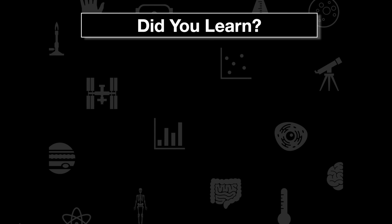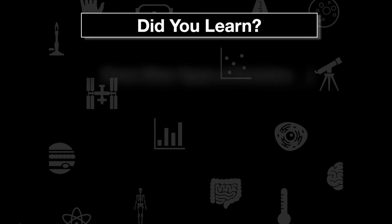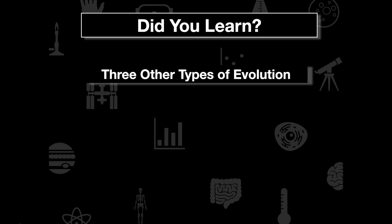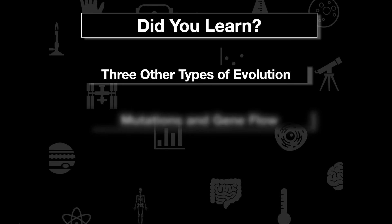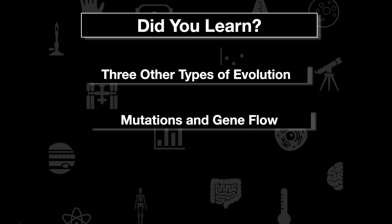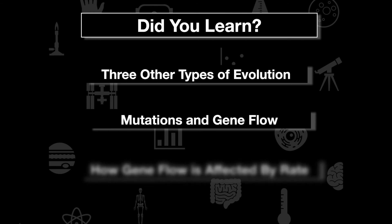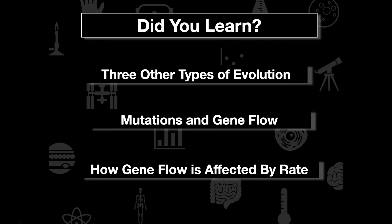To summarize: we covered two of the three other types of evolution beyond natural selection — mutations and gene flow. In part two, we will cover genetic drift. We also learned how gene flow is affected by rate. See you all in class tomorrow.